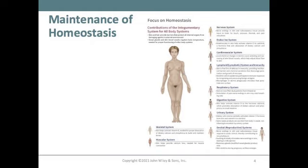Suckling of a baby stimulates nerve endings in the skin, leading to milk ejection. Mammary glands are modified sweat glands that produce milk, and the skin stretches during pregnancy. This is an overview of how the skin interacts with all of the various systems of the body to help maintain homeostasis.